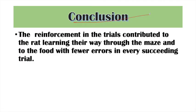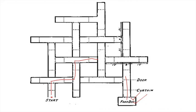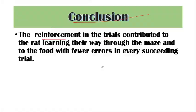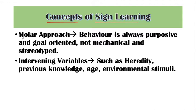The rat managed to reach its food box. Tolman's conclusion was that there was no enforcement in the trials — but the rat had motivation (the expectation of food), which made it keep trying. The rat had a purpose: to explore and find its way through problem solving.